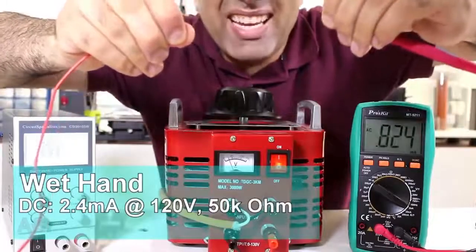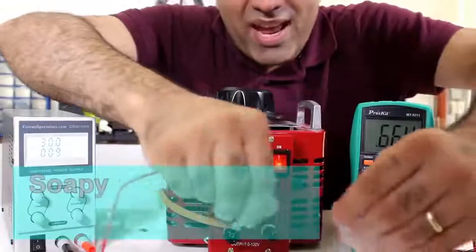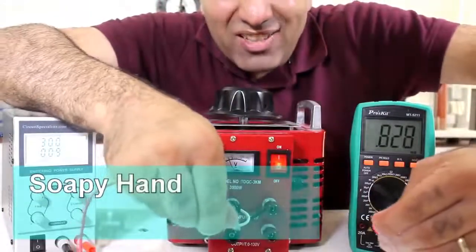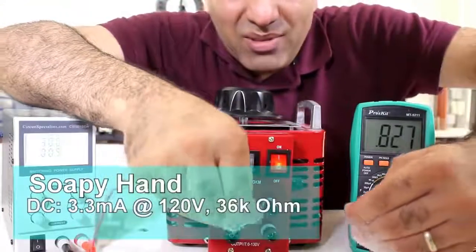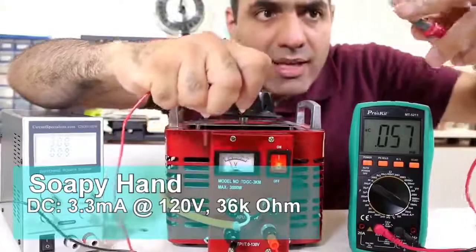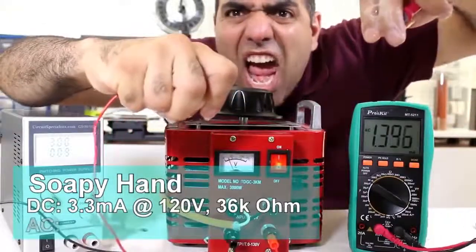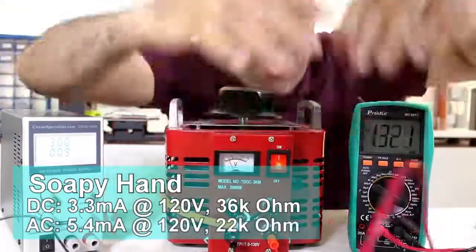Wet hand AC is around 0.8 milliamps, soapy hand DC, it's around 0.8, 0.9 milliamps. Soapy hand AC, ow, 1.3, 1.4.